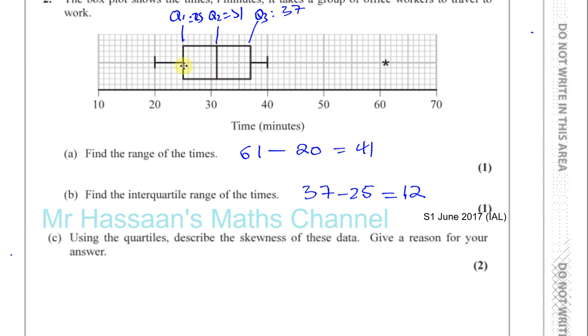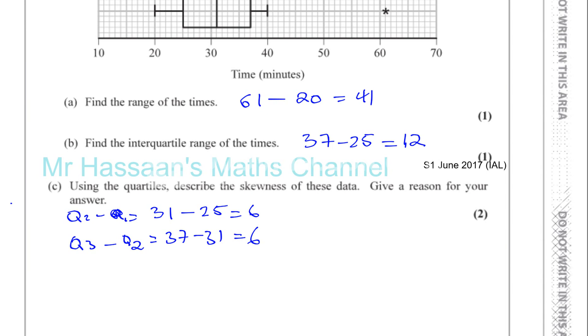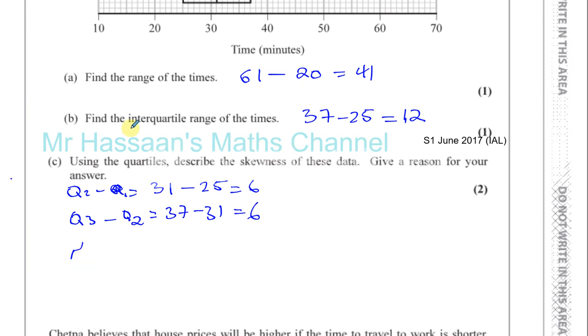Let's look at how far Q2 is from Q1. So Q2 minus Q1 is equal to 31 minus 25, which is 6. And Q3 minus Q2 is going to give us 37 minus 31, which is also 6. So we can say that there's no skew. Symmetrical, no skew. And the reason we can say there's no skew is because Q2 minus Q1 is the same as Q3 minus Q2. That's perfectly fine for your answer for part C.